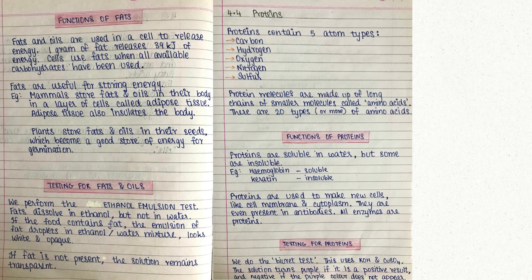Testing for carbohydrates: carbohydrates are also known as reducing sugars and to test for reducing sugars, we can conduct the Benedict's test. In a sample of carbohydrate solution, we add Benedict's solution, which is originally blue in colour, and heat it in a water bath set to around 80 degrees Celsius. If the test is positive, it will turn brick red, whereas if the test is negative — meaning no reducing sugar is present — it will remain blue.